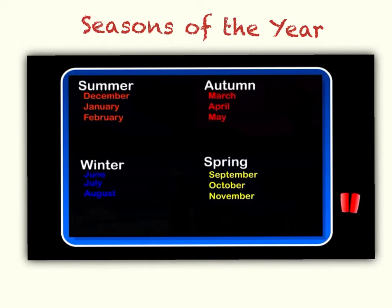Our next season is winter. Winter has the months of June, July, and August. In winter, we tend to wear tracksuit pants and jumpers because it's starting to get cold. Our school uniform might change — instead of wearing our T-shirt, we might wear a jumper over top of that. And we might have the heating on just to warm the place up because it is starting to get cold. So our winter months are June, July, and August.